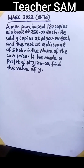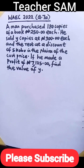A man purchased 180 copies of a book at 250 naira each. He sold Y copies at 300 naira each, and the rest at a discount of 5 kobo in the naira of the cost price. If he made a profit of 7,125 naira, find the value of Y.